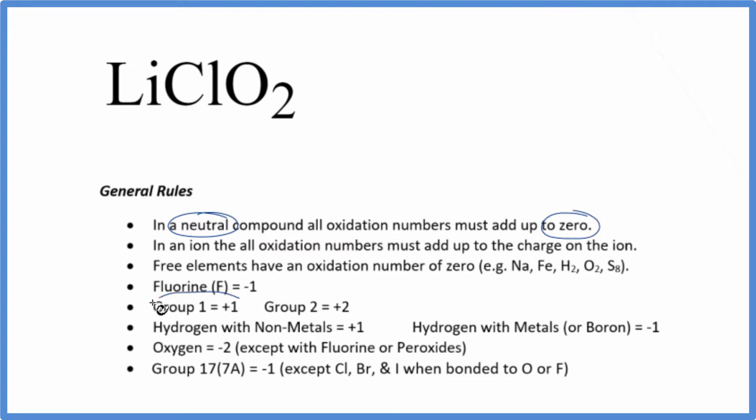Lithium, that's in group one on the periodic table, so that'll be a plus one. Chlorine, we don't know. It really depends what it's bonded to. Let's just call it X. And then oxygen is almost always minus two. Just a few exceptions.